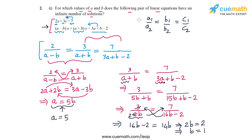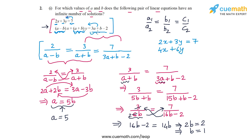Let's verify that we actually get an infinite number of solutions. The first equation is 2x plus 3y equal to 7. In the second equation: A minus B is 4, so 4x; A plus B is 5 plus 1 which is 6, so 6y; and 3A plus B minus 2 is 15 plus 1 minus 2 which is 14, the constant term. The coefficients of x, y, and the constant terms are all in the same ratio, 1 by 2.